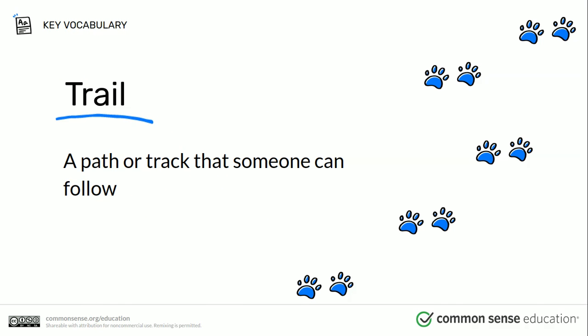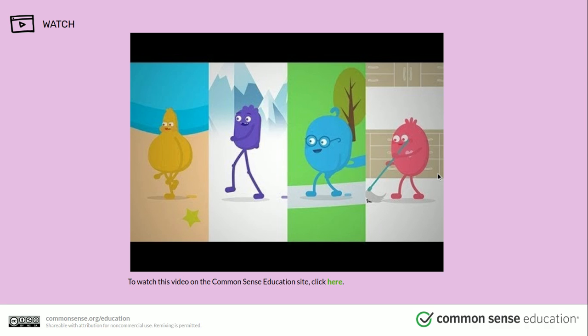Today we are going to watch a video called Follow the Digital Trail. Have any of you heard of the word trail before? A trail is a path or a track that someone can follow — like in the woods when you go for a hike — but there is also a digital trail. Let's watch this short video explaining what a digital trail is, and pay close attention to the types of information that are okay to share online and what is not okay. Let's watch.